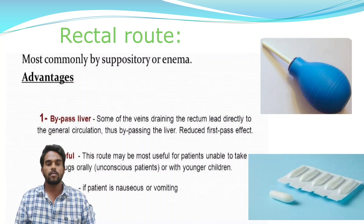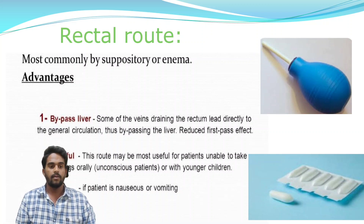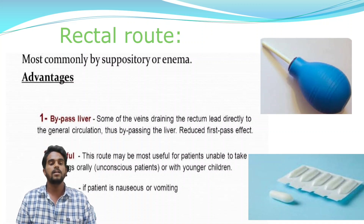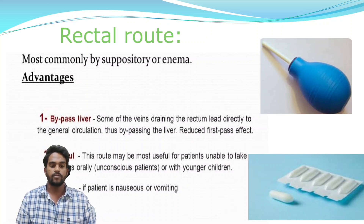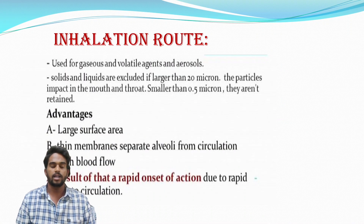The rectal route is most commonly administered by enema. Advantages include bypassing the liver, as some of the veins draining the rectum lead directly to the general circulation, thus reducing the first-pass effect. This route may also be most useful for patients unable to take drugs orally, for younger children, or when patients are vomiting regularly.